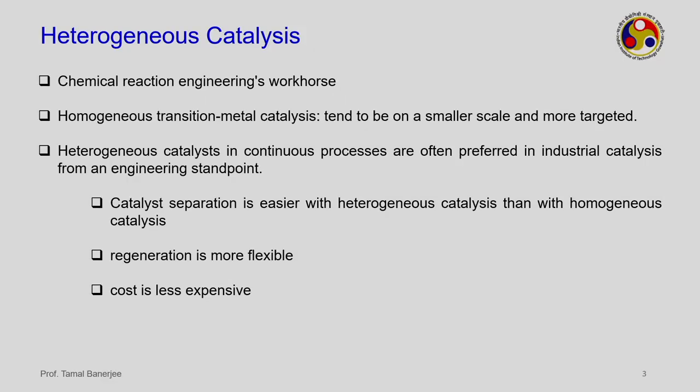What is heterogeneous catalysis? It is the principal form of reactions occurring in chemical engineering — a workhorse. As the name suggests, in heterogeneous catalysis the catalyst is loaded separately. Homogeneous catalysis involves a single phase, tends to be on a smaller scale, and is more targeted — used for fine chemicals. For bulk chemicals, heterogeneous catalysis is more adept, and continuous heterogeneous processes are preferred from an engineering standpoint.